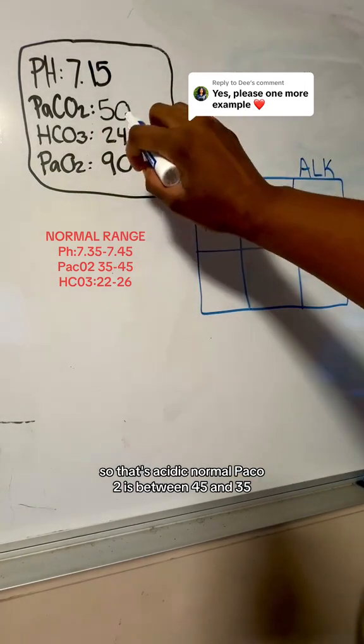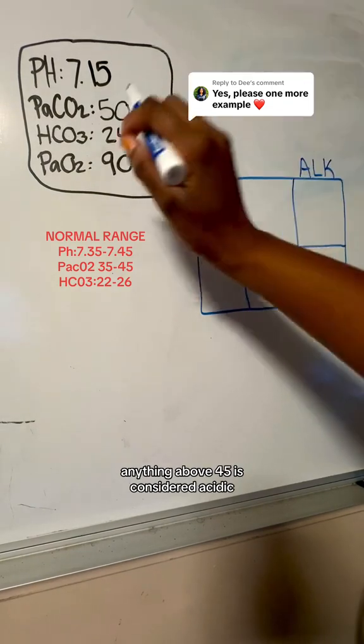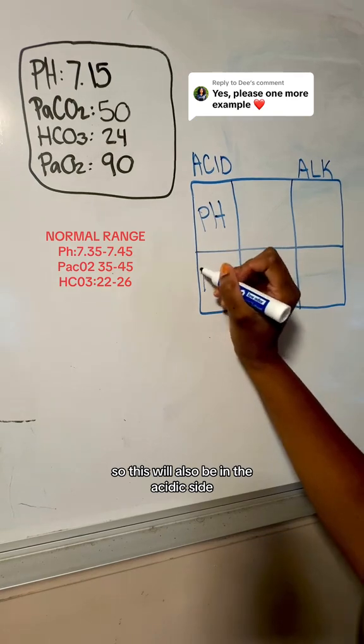Anything above 45 is considered acidic, so this will also be in the acidic side.